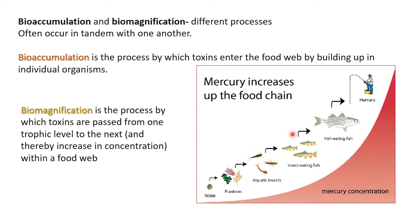For example, mercury increases up the food chain. It is released in the form of industrial waste into water — that's how mercury enters a water body. The planktons growing there consume some level of mercury, then aquatic insects which feed on planktons consume that mercury, passing it to the next level. Insect-eating fishes feed on these aquatic insects, and mercury is passed on to fish-eating fishes and then to humans who also consume fish.